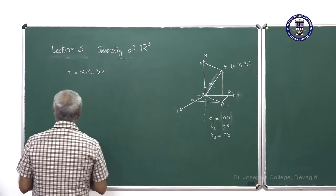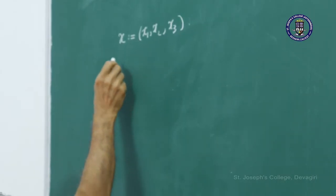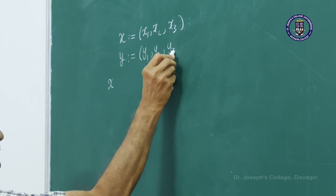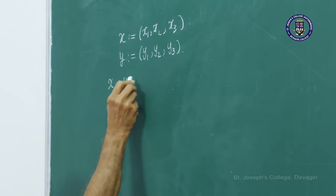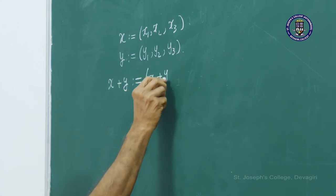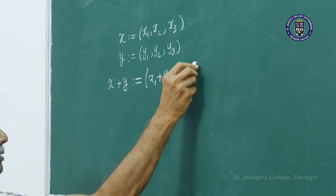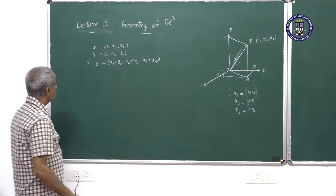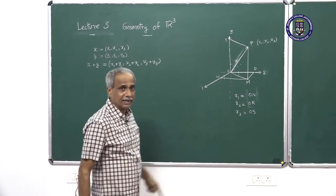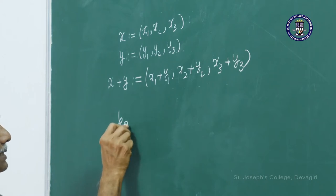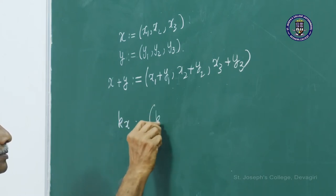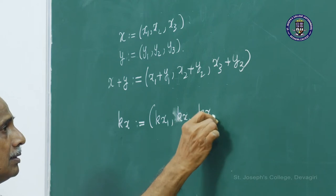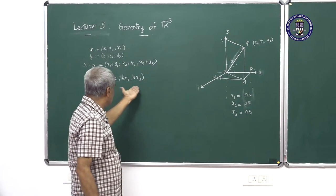Now we can talk about addition. If x = (x1, x2, x3) and y = (y1, y2, y3), then x + y is defined as (x1 + y1, x2 + y2, x3 + y3). Similarly, you can scalar multiply: k times x gives (k·x1, k·x2, k·x3), and that also gives a vector in space.